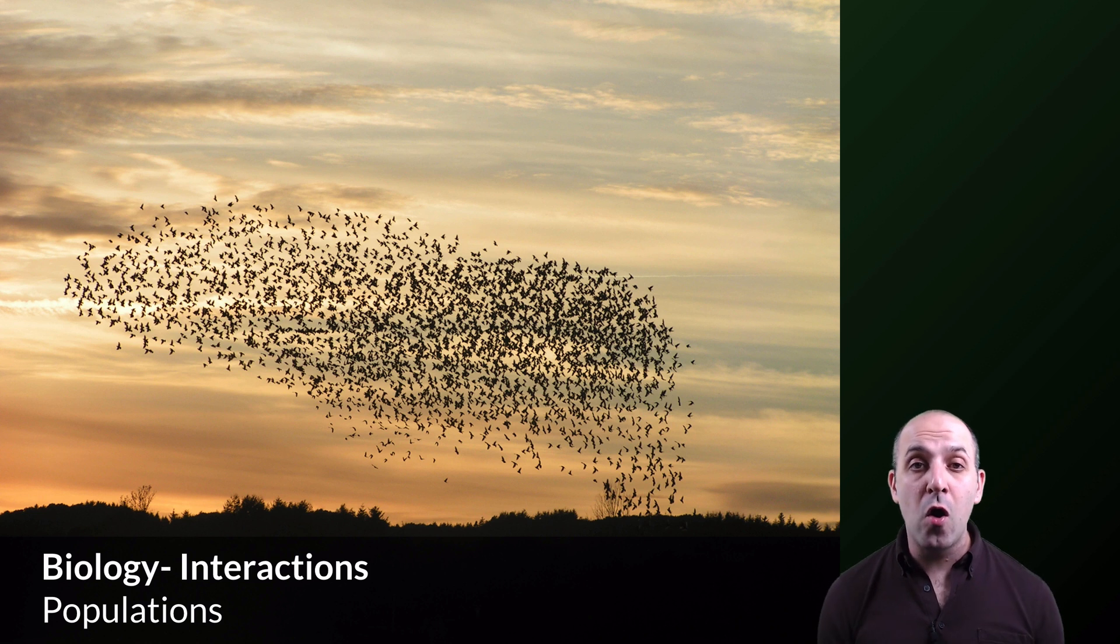A population is simply all of the individuals of one species in a particular area, and that area can be as big or as small as we want it. This image of starlings represents the population of starlings in this field ecosystem. That's one population.